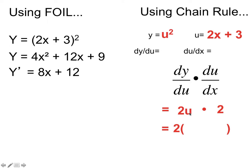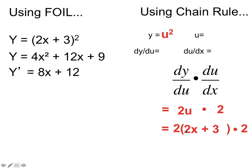We can't leave the answer as 4u — we need to write it in terms of x. So it's 2 times (2x plus 3) times 2, which after distributing gives 4x plus 6, and multiplying by 2 gives 8x plus 12. We get the same derivative either way. In this instance, using FOIL is probably quicker, but when the power is 3, 4, 5, or 6, you might not want to FOIL anymore — you'd want to use the chain rule.